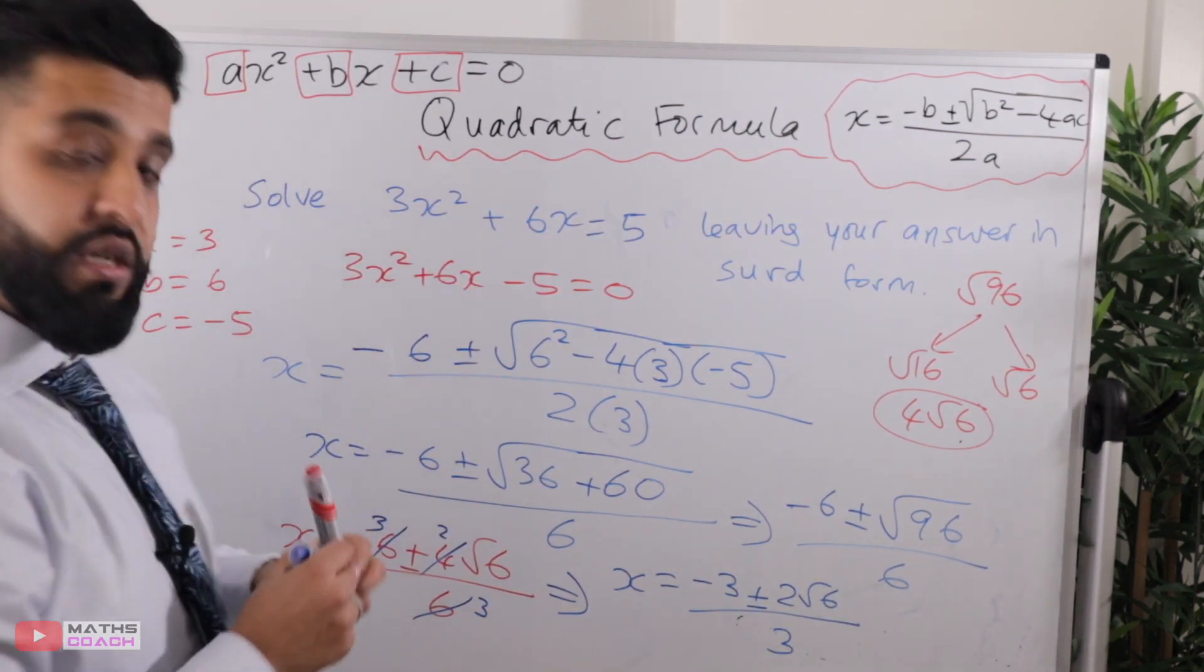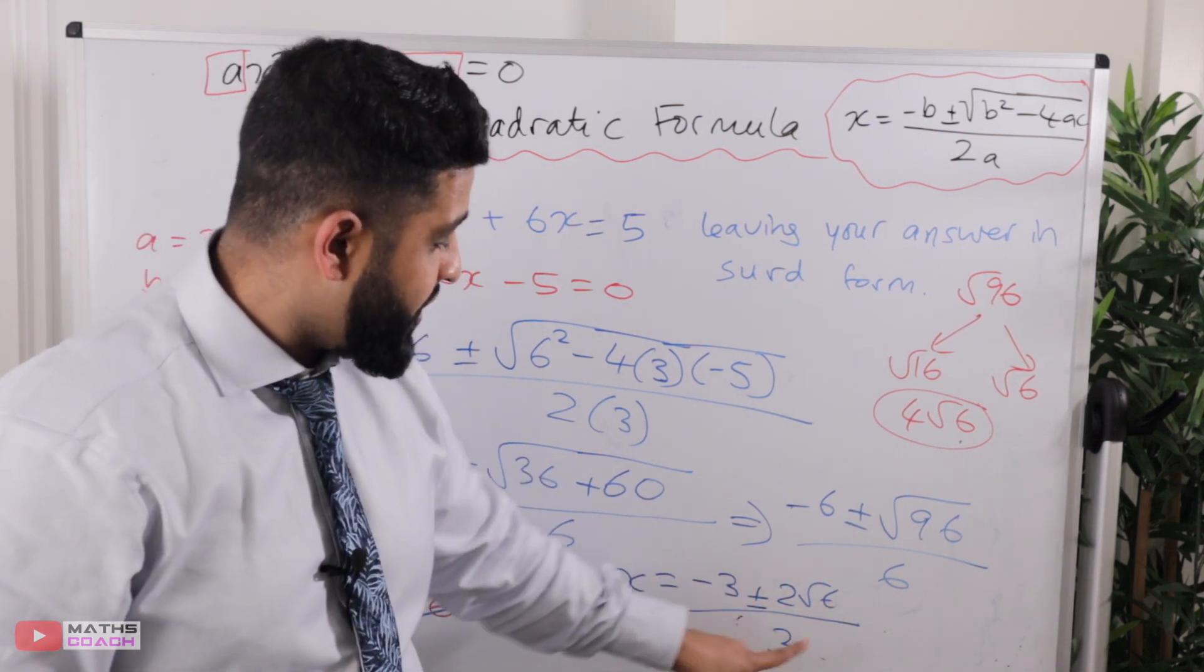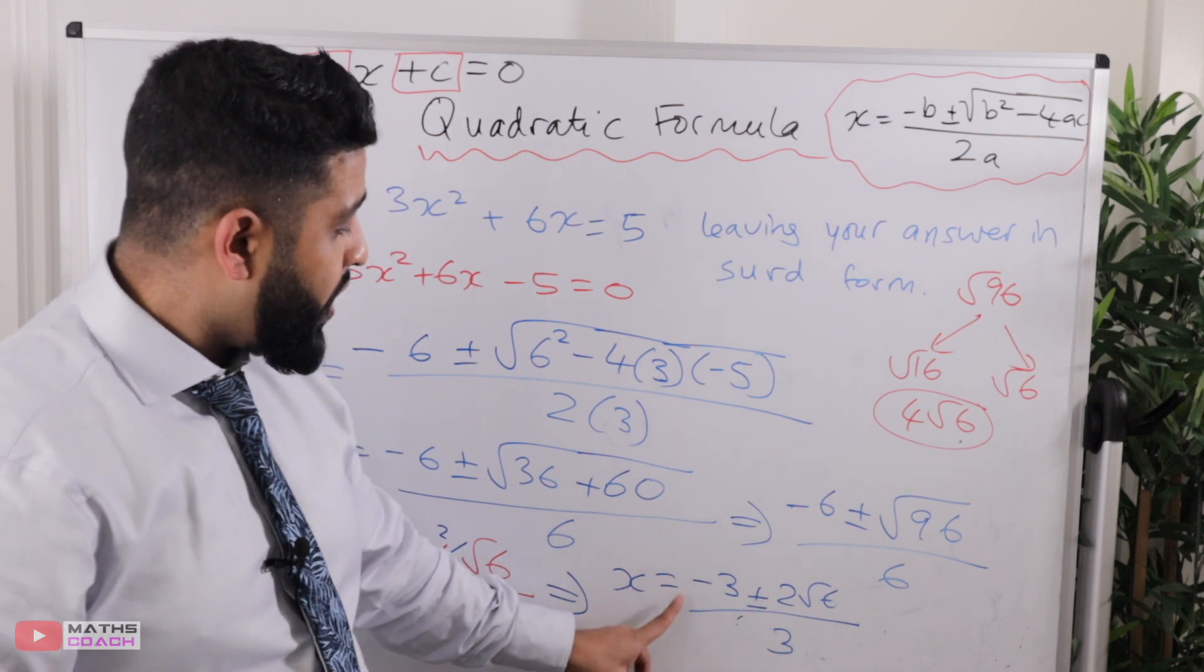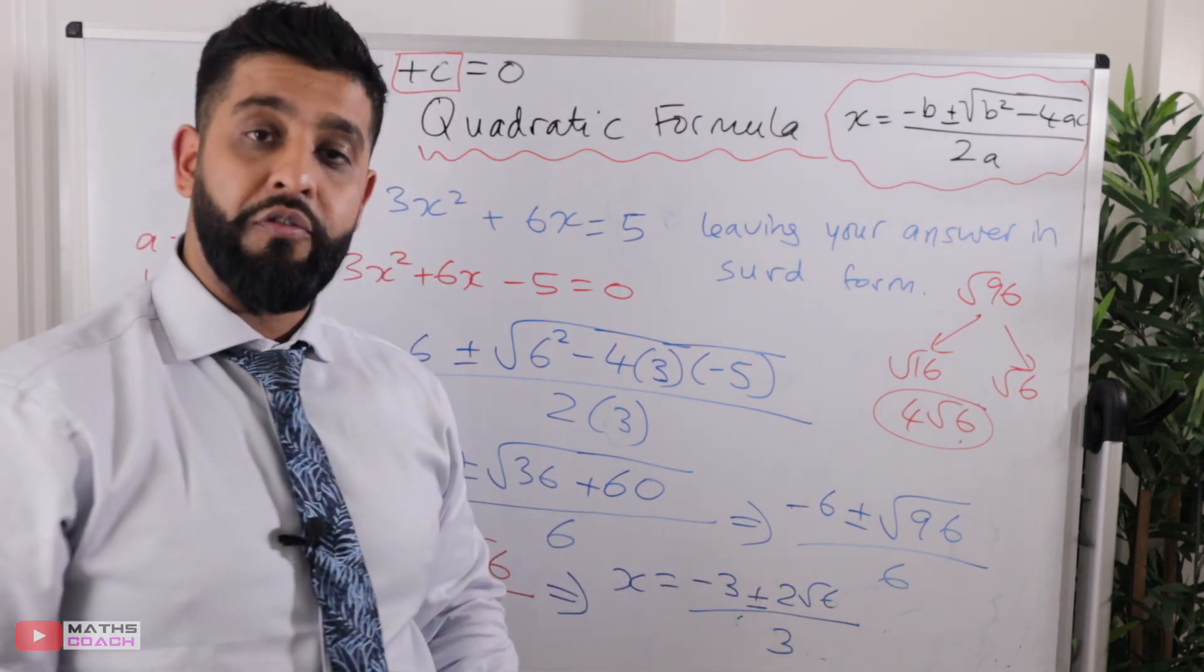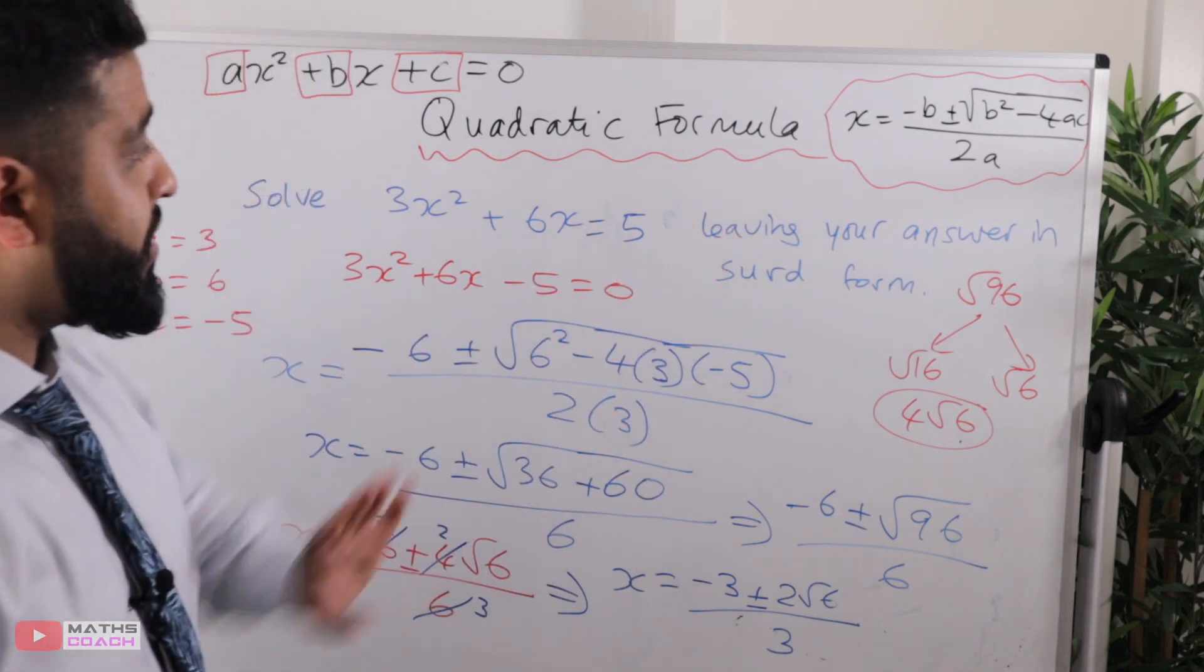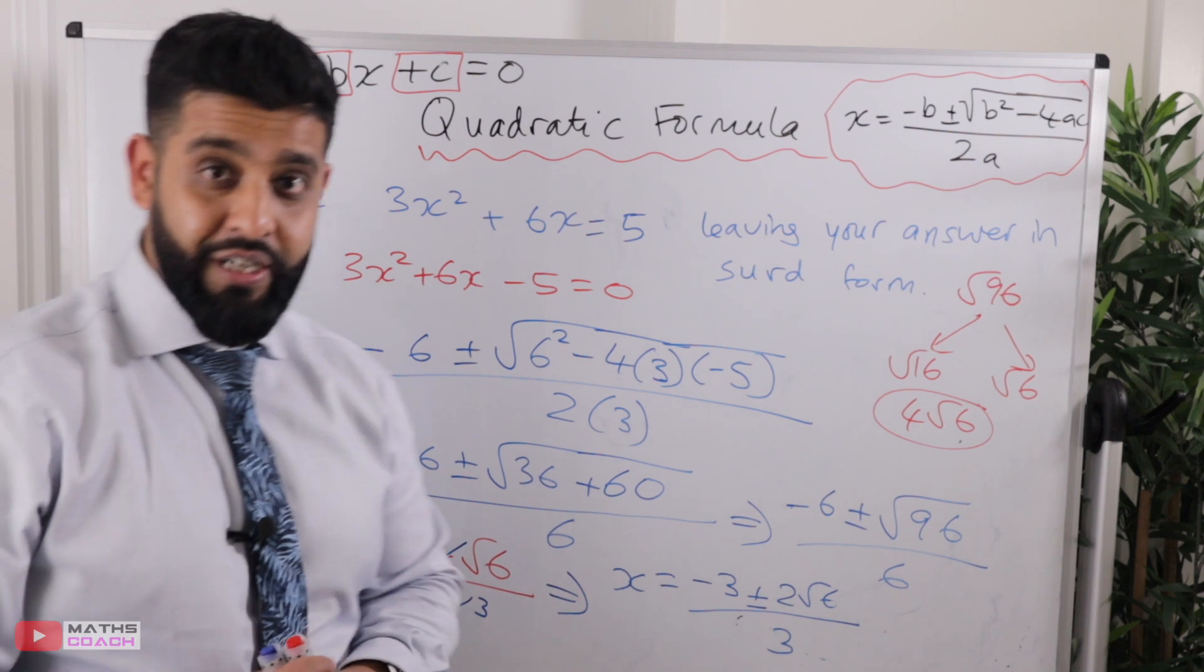Our two answers are going to be minus 3 plus 2 root 6 over 3 or minus 3 minus 2 root 6 over 3. And that is our answer in surd form and we have solved this using the quadratic formula.